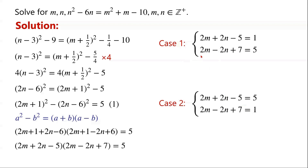For case 1, we add these two equations. 2m plus 2m is 4m. 2n minus 2n is 0. Minus 5 plus 7 is 2. So 4m plus 2 equals 6.